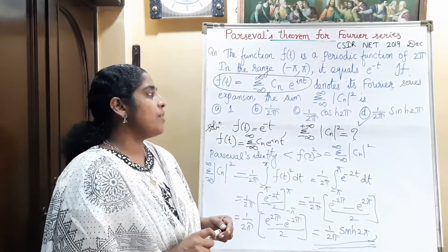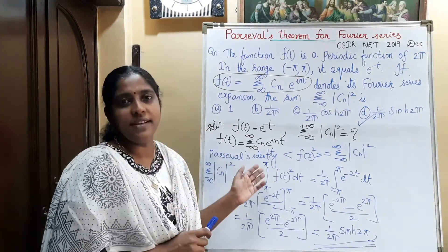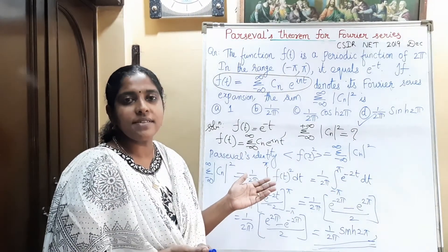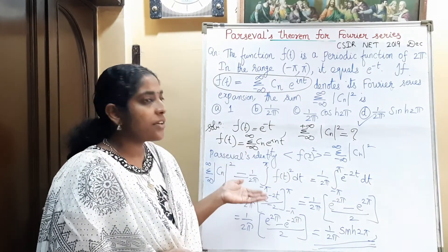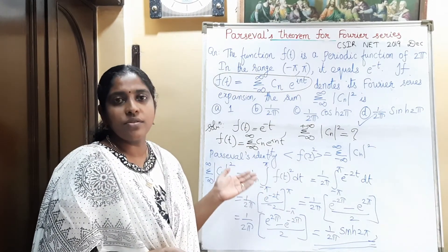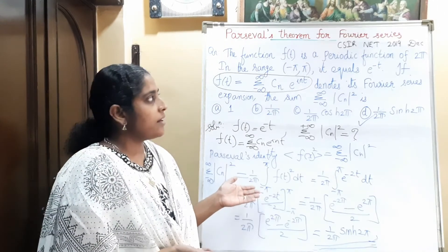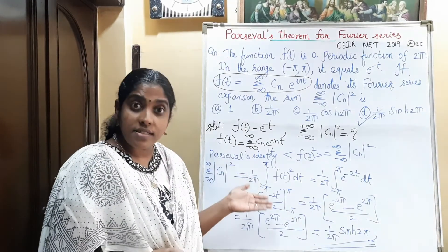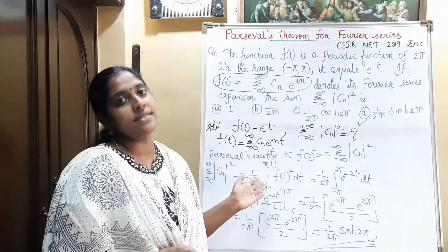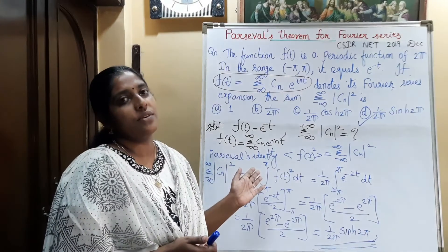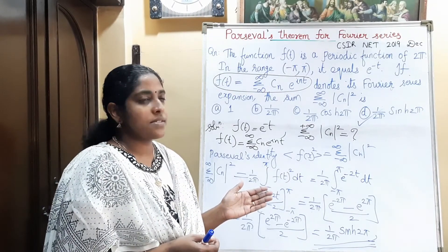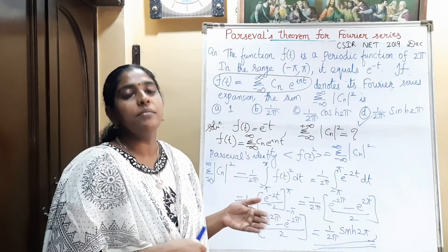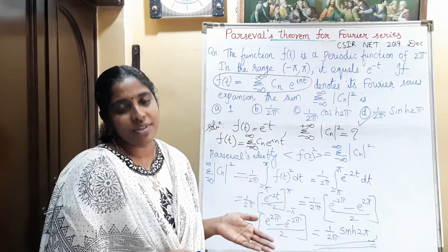So this question is very easy if we know Parseval's identity — we can find the answer without much effort. This question is worth 5 marks in Part C of the CSIR NET exam. Try more questions similar to this.